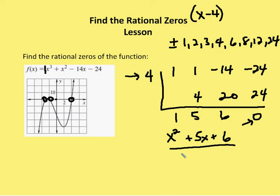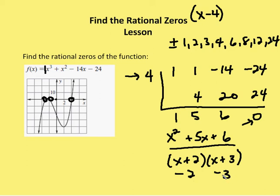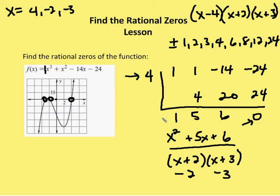I can see x squared plus five x plus six factors to x plus two times x plus three. You can figure that out using the diamond and box process as well. So the balance of my roots are going to be negative two and negative three. So I have x equals four, negative two, and negative three as my result. This polynomial factors to x minus four times x plus two times x plus three. Once you get the synthetic division system down to four values including a zero at the end, it leaves you with a quadratic you can just factor.